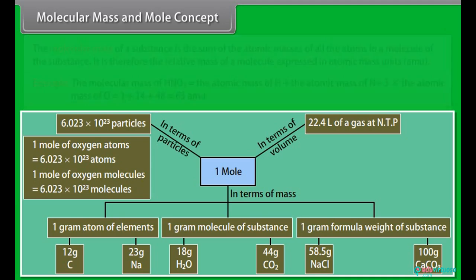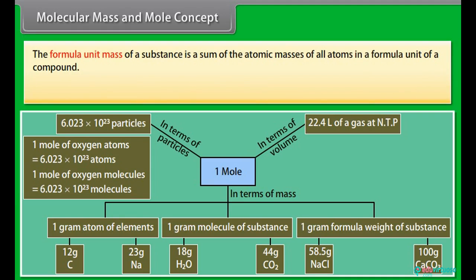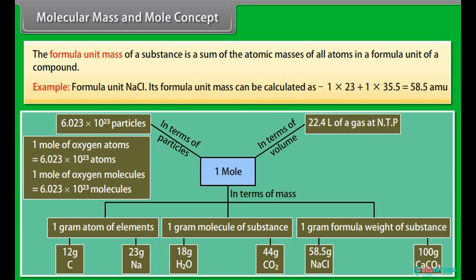The molecular mass of a substance is the sum of the atomic masses of all atoms in a formula unit of a compound. Example: Formula unit NaCl. Its formula unit mass can be calculated as 1 into 23 plus 1 into 35.5, which equals 58.5 units.